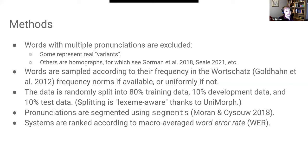Words are sampled according to frequency in the Wortschatz frequency norms if available, or uniformly if not. The only language for which this wasn't possible was Digay, which appears in some of our shared tasks. The data is randomly split into 80% training, 10% development, and 10% test data. Splitting is lexeme-aware, thanks to a Unimorph lookup. Pronunciations are segmented using the segments library. Systems are ranked according to macro-average word error rate.